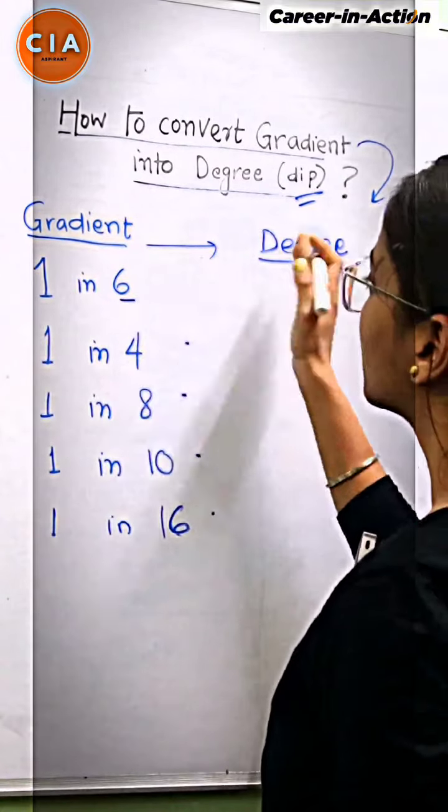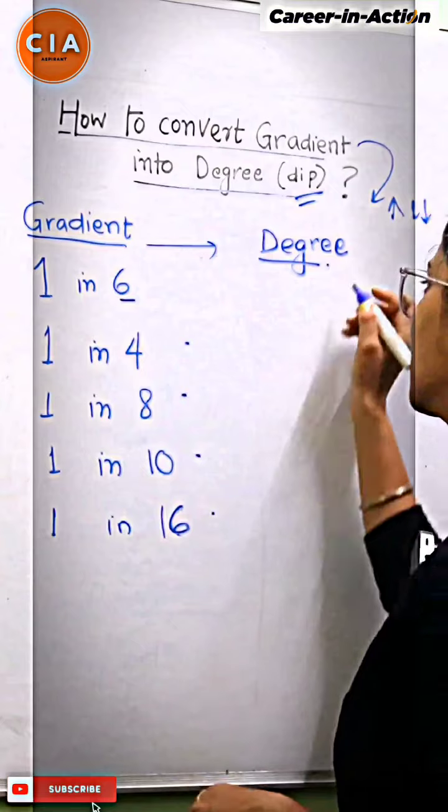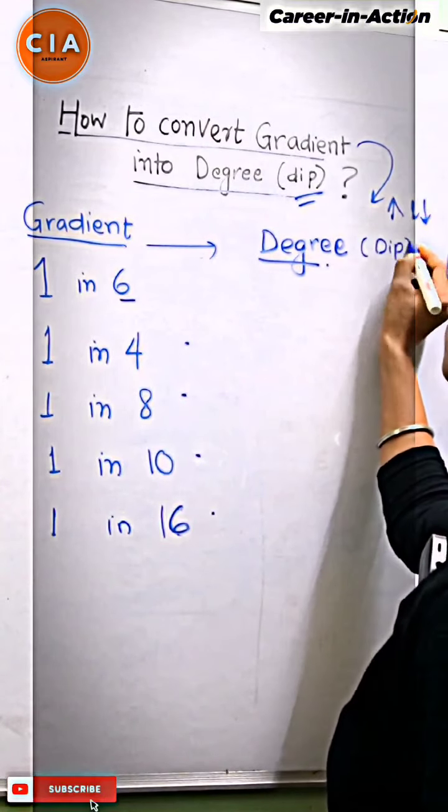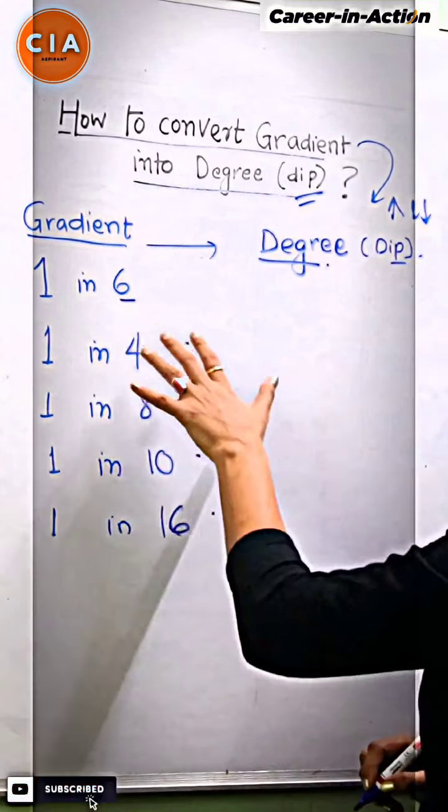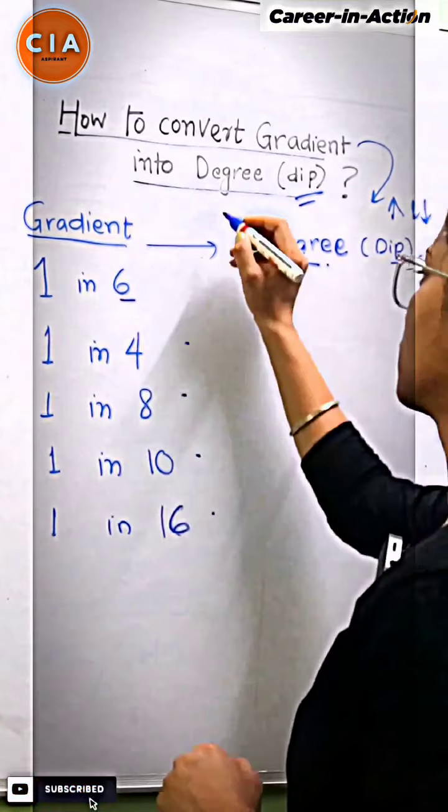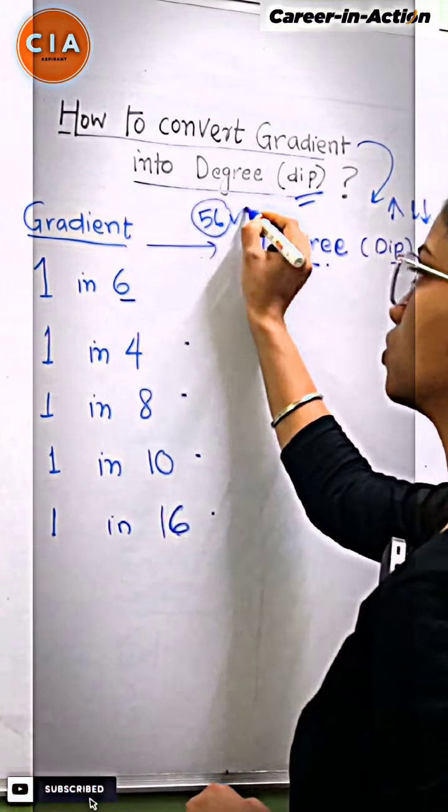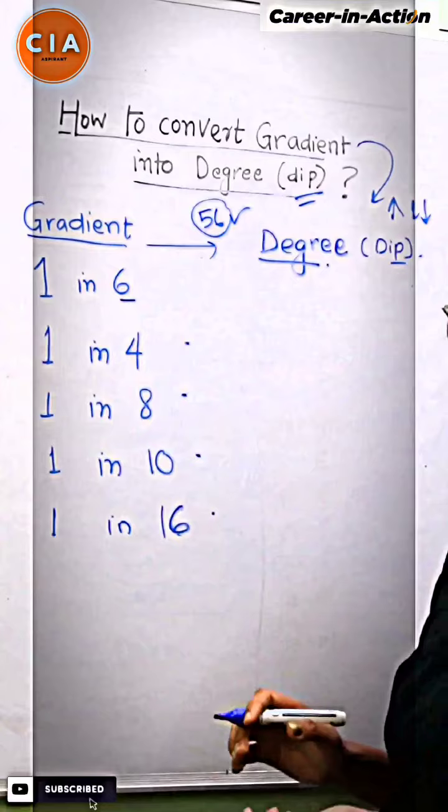But when you say that gradient is not a degree, then you need to convert it. Let me tell you how to convert it. We will use our number 56. We will always remember that. You will do all the work with this.